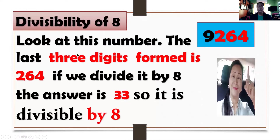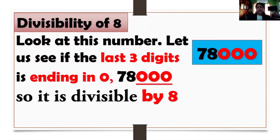So I want you to look at this number. We have 9,264. The last three digits form is 264. So if we divide it by 8, the answer is 33. So it is divisible by 8. We have here 78,000. Another rule is that if the last three digits ending in 0, it is divisible by 8. 78,000 ends in 3 zeros. Yes, that's why it is divisible by 8.